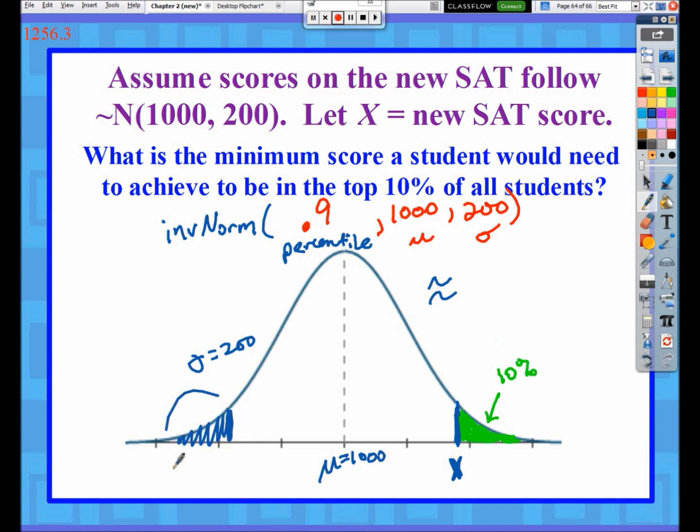Keep in mind, if they ever mention the top 10%, you need to make sure that you're on the right side of the distribution. So I get a score of 1256.3 if I go to the nearest tenth.